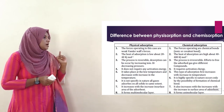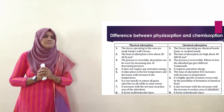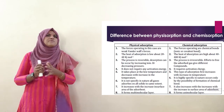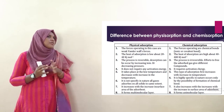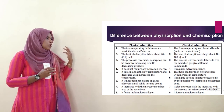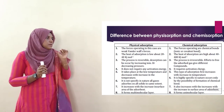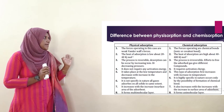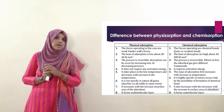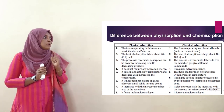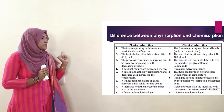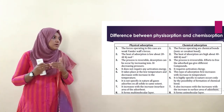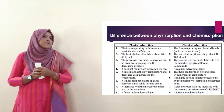Physisorption is not specific in nature — all gases can adsorb on all solids to the same extent. Chemisorption is highly specific — it occurs only when there is the possibility of formation of a chemical bond between adsorbate and adsorbent.